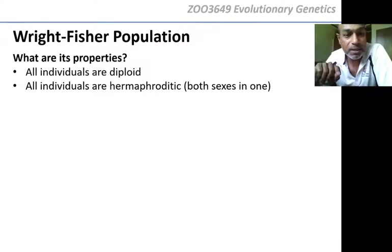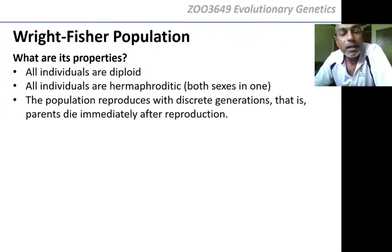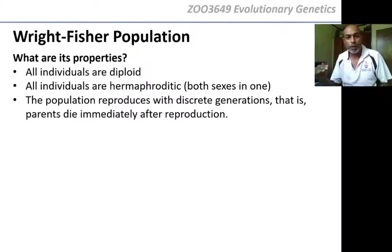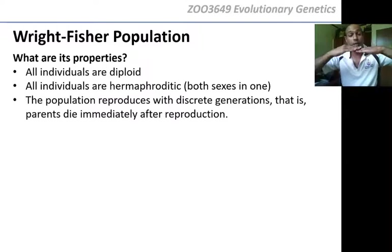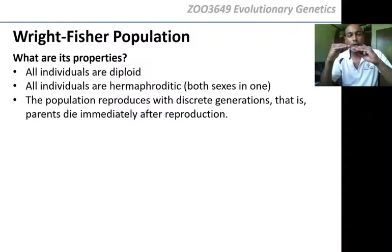There's no sex in this population — each individual is both male and female together, hermaphroditic. This removes sexual selection. There are also no overlapping generations like there are with humans, where parents are still alive while offspring are being raised. In the Wright-Fisher population, immediately when the new generation is born, the old generation dies, so the populations never overlap in age.